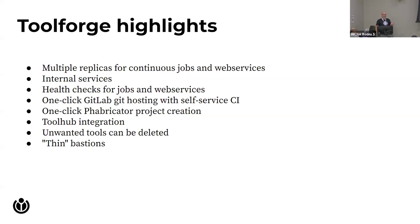Both continuous jobs and web services now support a health check option to help Kubernetes decide if your service needs restarting. For a continuous job, you write a shell command that runs every second during startup until it succeeds, then every 10 seconds afterward. If the once-per-second checks fail 120 consecutive times, the system kills it and tries to restart. In the every-10-seconds check, three consecutive failures trigger a restart. This helps eliminate people coming to IRC to ask for a web service restart — the little gremlins inside the computers can do it automatically.